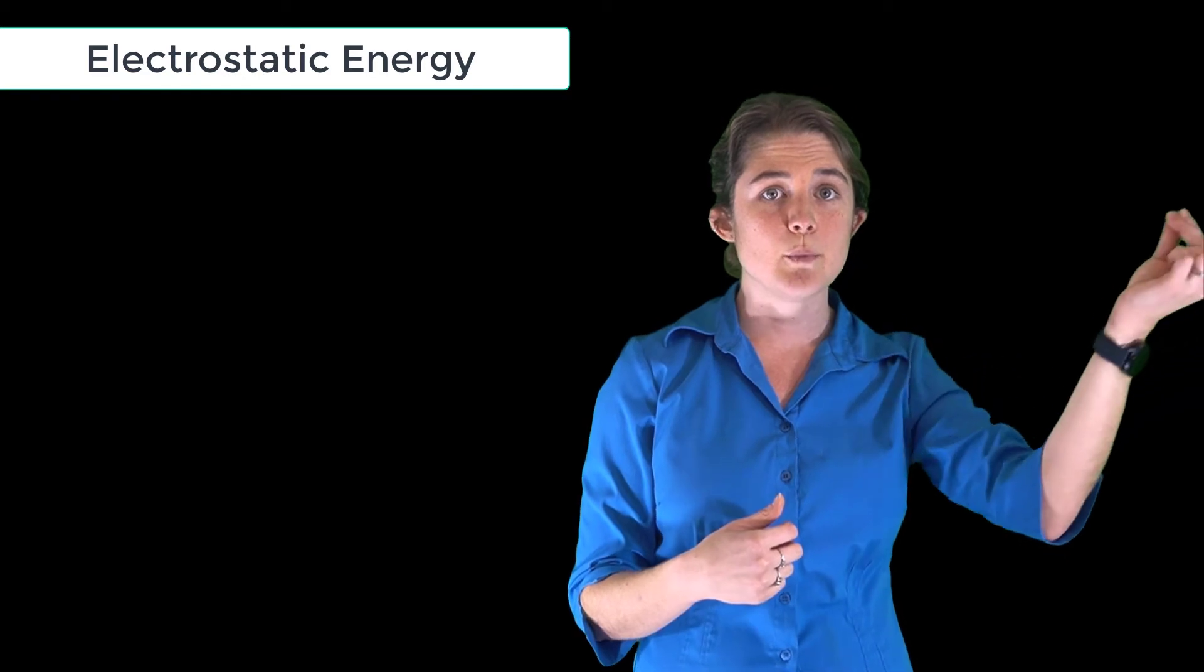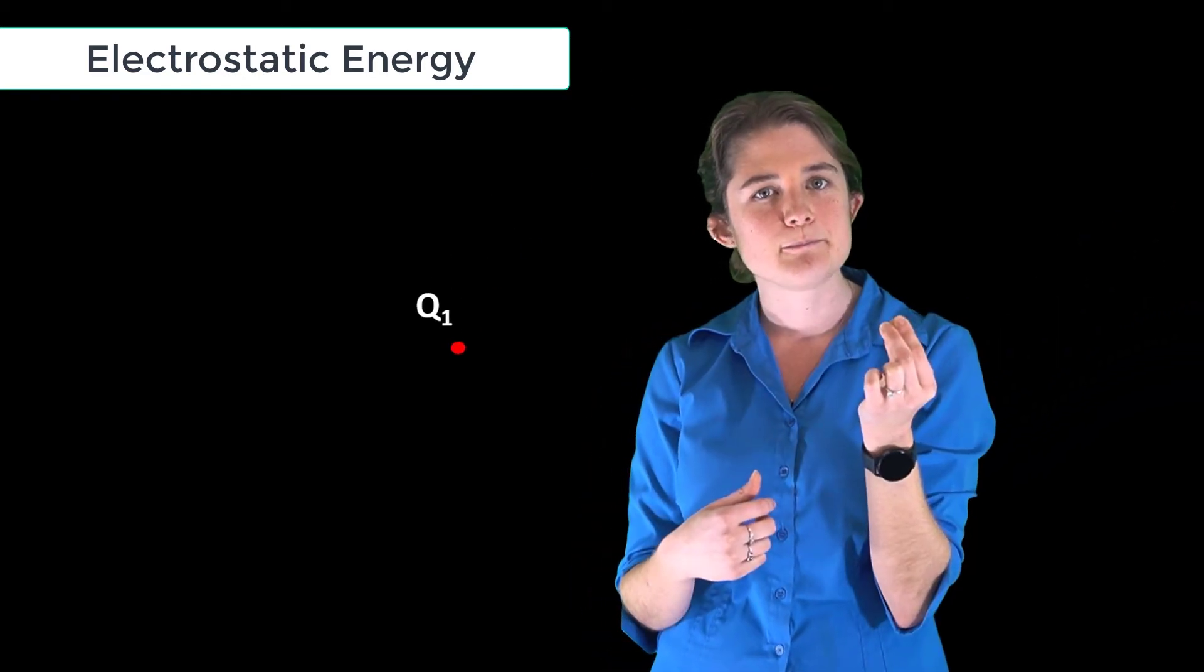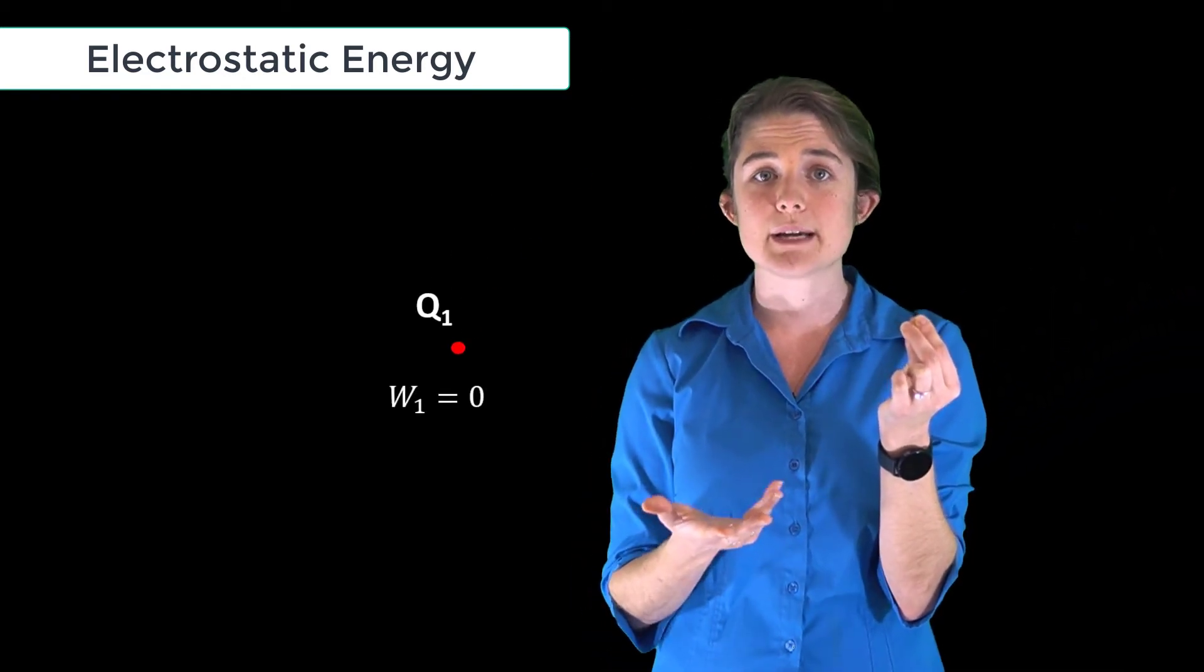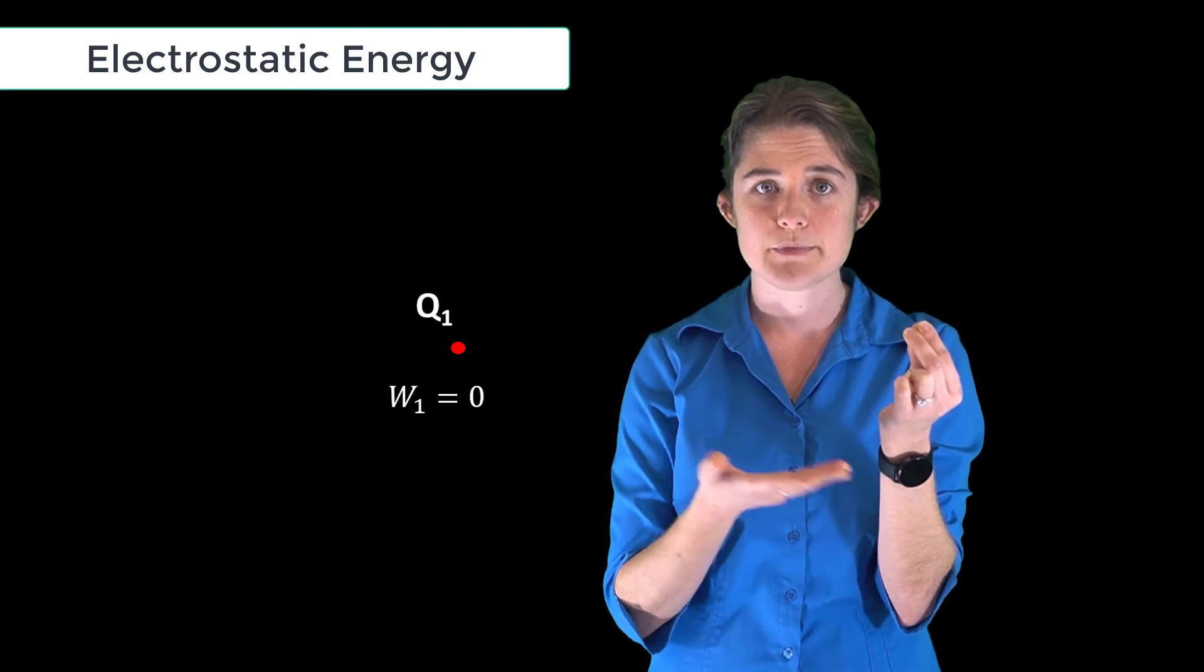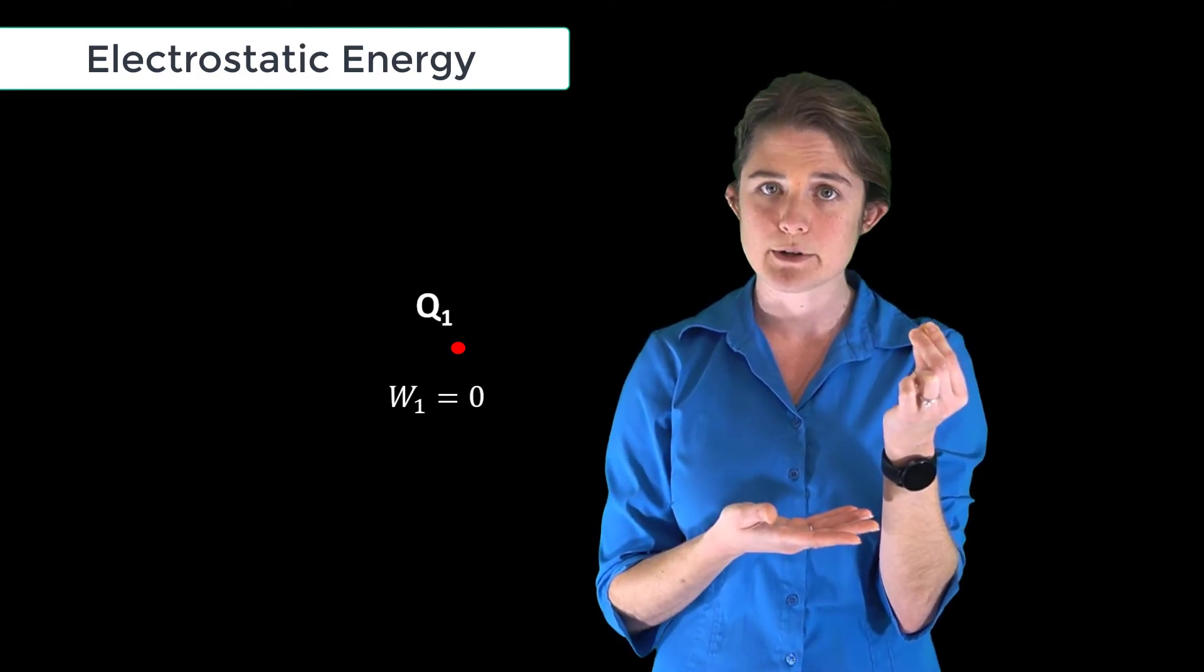Then we grab one charge, q1, and pull it into our system. This doesn't take any work because it's the only charge in the system. There is no existing field in the system to push or pull at it.